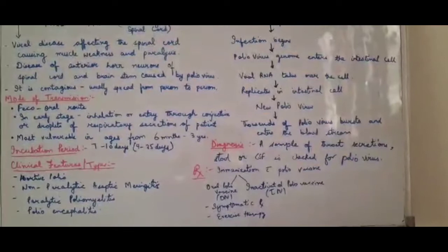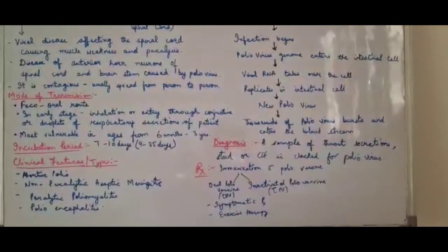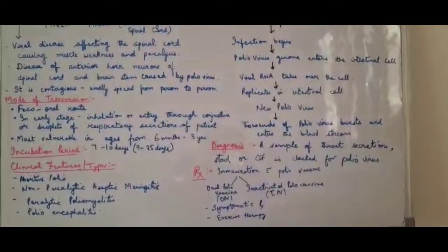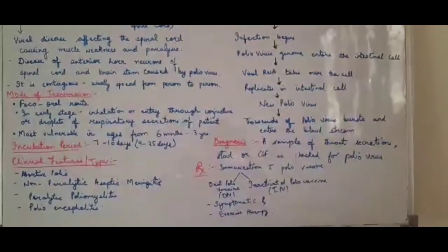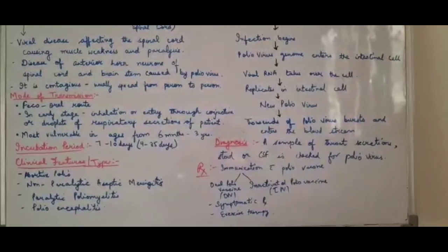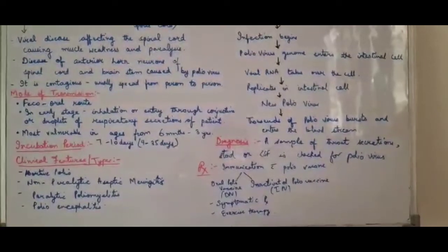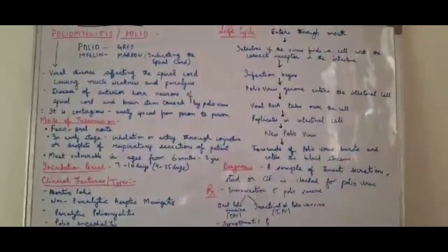Next is symptomatic treatment. In polio, exercise therapy plays a very important role because there is weakness and paralysis, and that is all corrected by exercise therapy. In prevention, you can control polio through immunization, by using hygienic ways, and by treating communicable diseases. So this is all about poliomyelitis. Thank you.